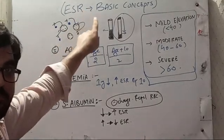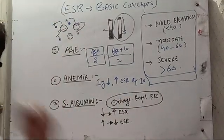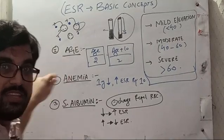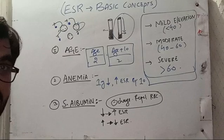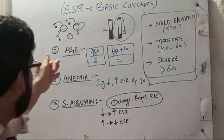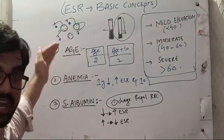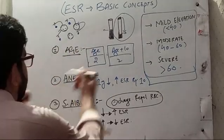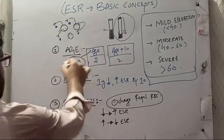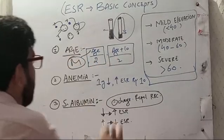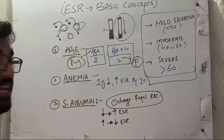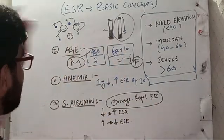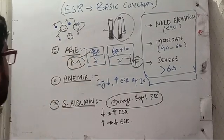Age is a risk factor for increase in ESR. As the person ages, the ESR increases. This is multifactorial, but there is a tendency towards anemia. How do you correct for age? Age divided by 2 - this correction is for males. For females, age plus 10 divided by 2. This can be the expected ESR.